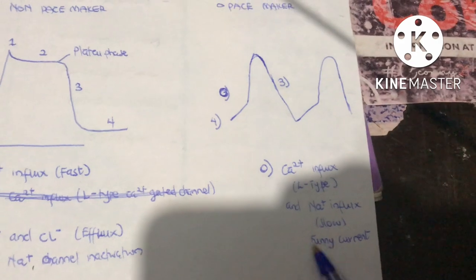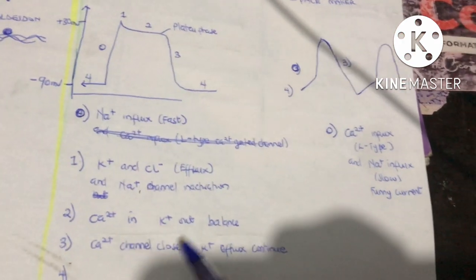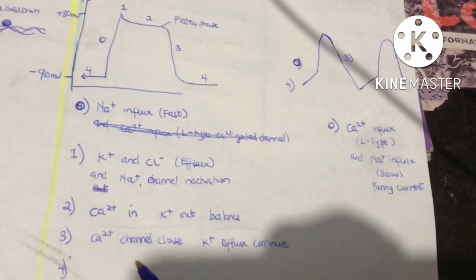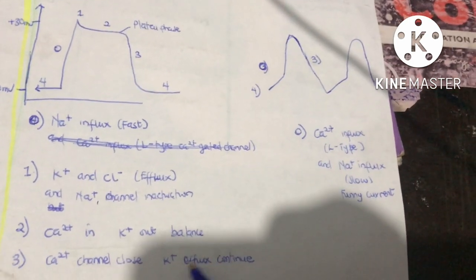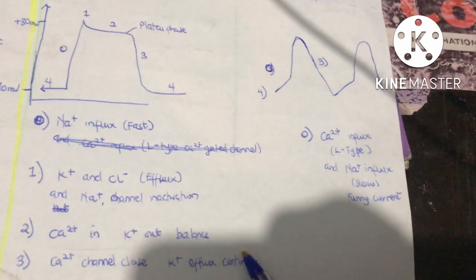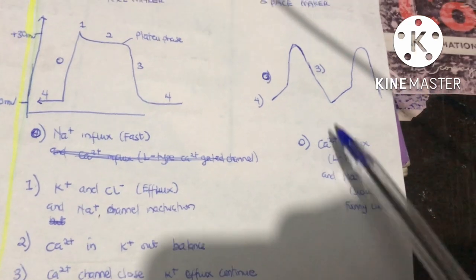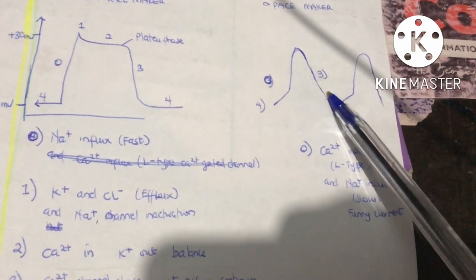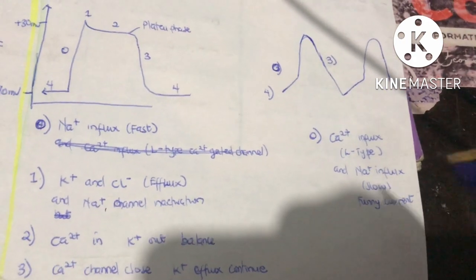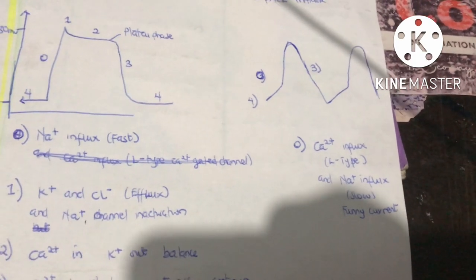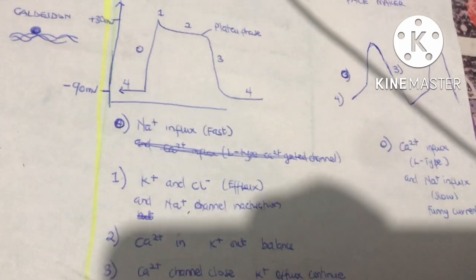Phase 3 of the pacemaker is repolarization, similar to the non-pacemaker: L-type voltage-gated calcium channels close, potassium voltage-gated channels open causing potassium efflux, bringing about repolarization. Phase 4 involves closure of voltage-gated potassium channels, and the resting potential is maintained by the sodium-potassium ATPase pump.